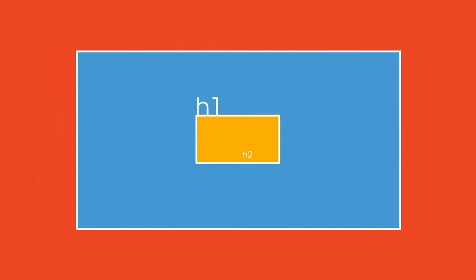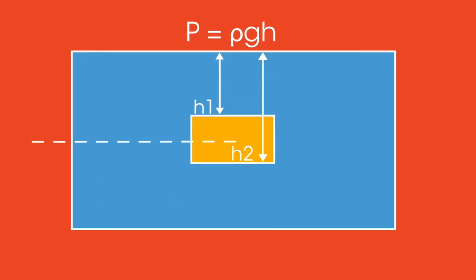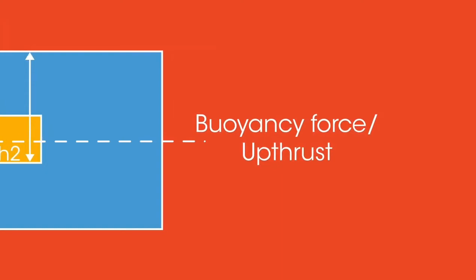Imagine a cuboid submerged in a tank of liquid. The distance from the surface of the liquid to the bottom surface of the box is greater than the distance from the surface of the liquid to the top surface of the box. So h2 is bigger than h1. Because p equals rho gh, the pressure on the bottom surface due to the liquid must be greater than the pressure on the top surface. This results in there being more force on the bottom surface of the box than there is on the top surface. The difference between these two forces causes there to be a net force upwards called the buoyancy force or upthrust.